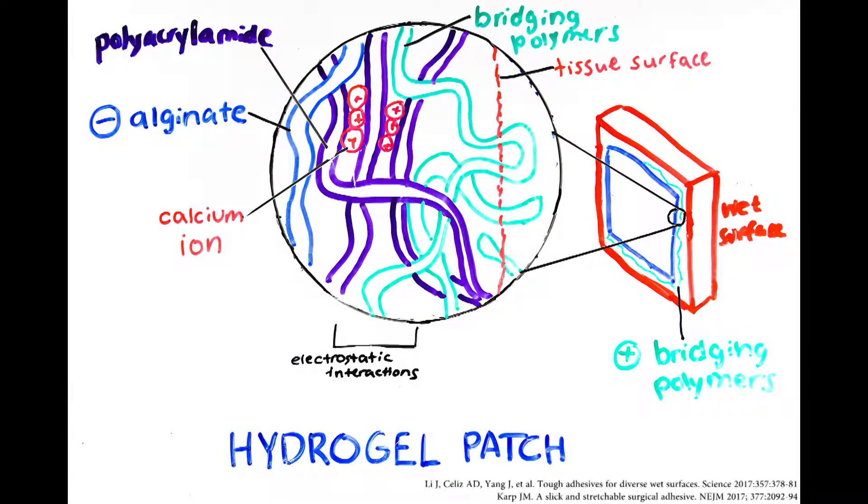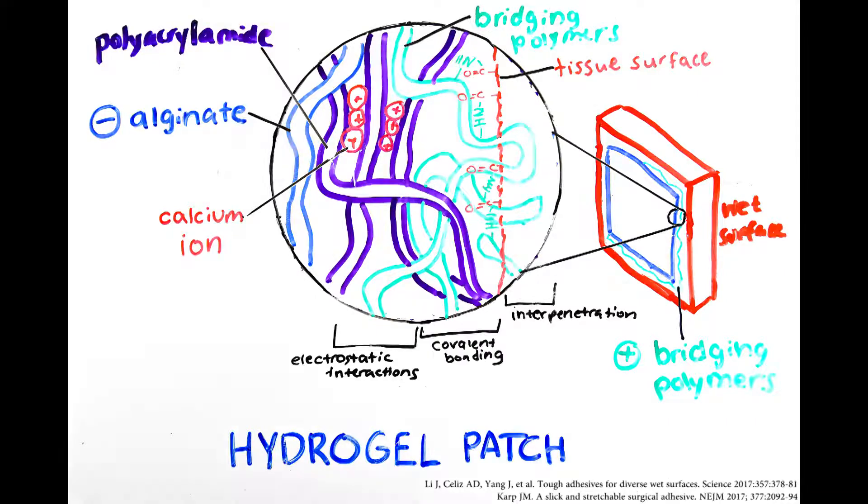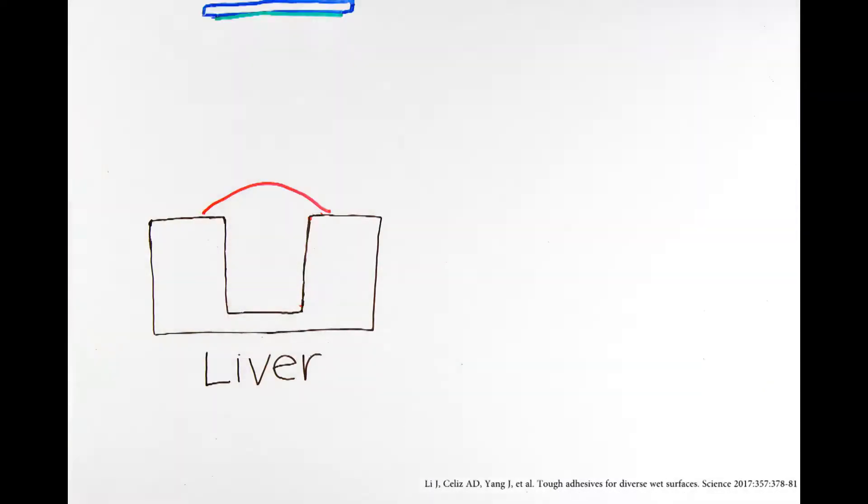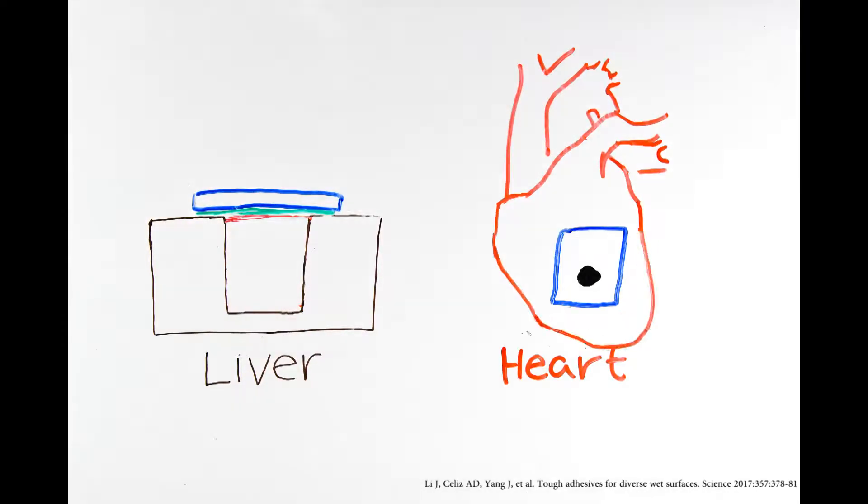Electrostatic interactions pull the hydrogel into the tissue surface, where it can then physically entangle with the permeable surface and form covalent bonds. Using this new technology, scientists have been able to stop bleeding in a liver and even close holes in a bleeding heart.